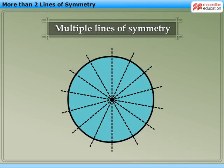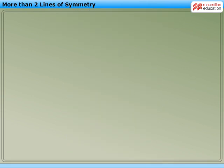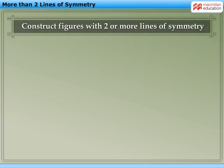Similarly, a circle has multiple lines of symmetry as shown here. We can use this knowledge for constructing figures with two or more lines of symmetry, starting from a small part.